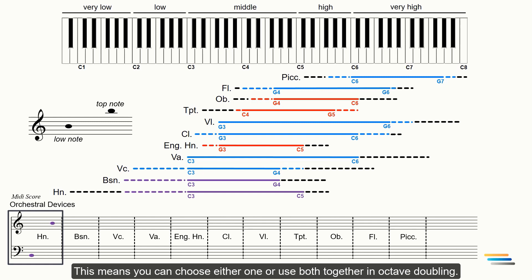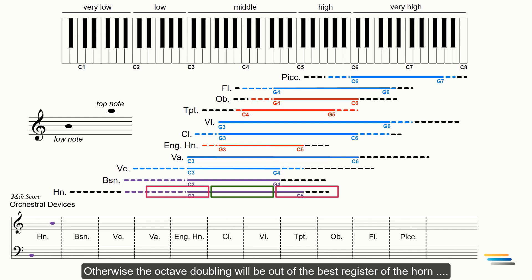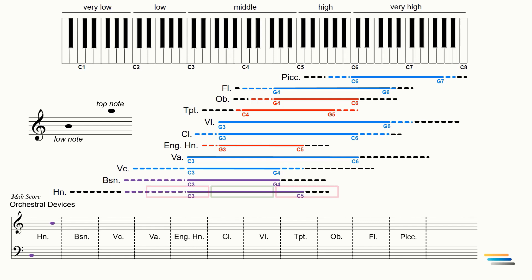This means you can choose either one or use both together in octave doubling. But this is not a problem if your melody is played in only one register. For example, let's say the boundary of the melody is between F3 and F4. You should mark just F3 and F4, otherwise the octave doubling will be out of the bass register of the horn and be placed in the bass register of other instruments.